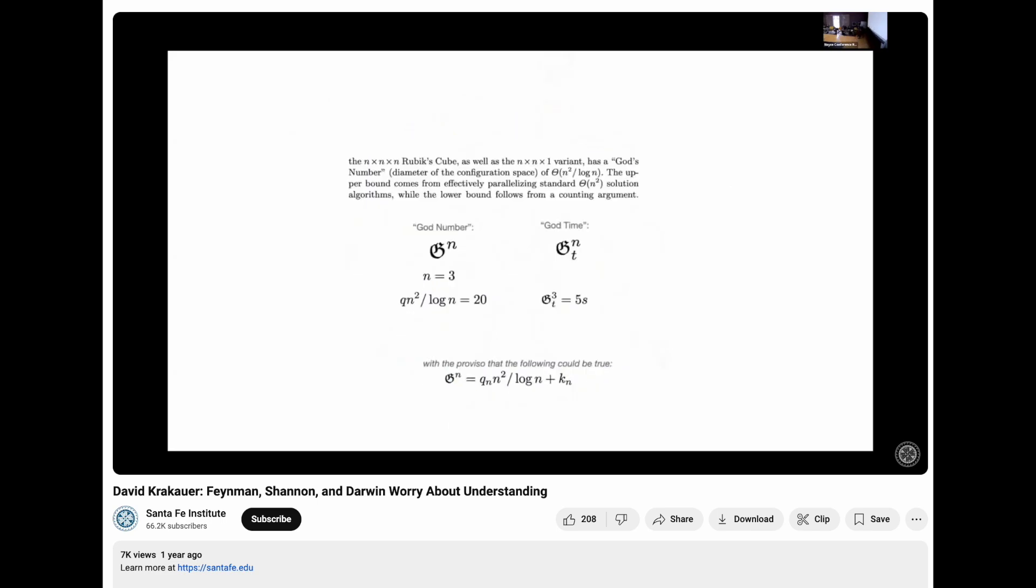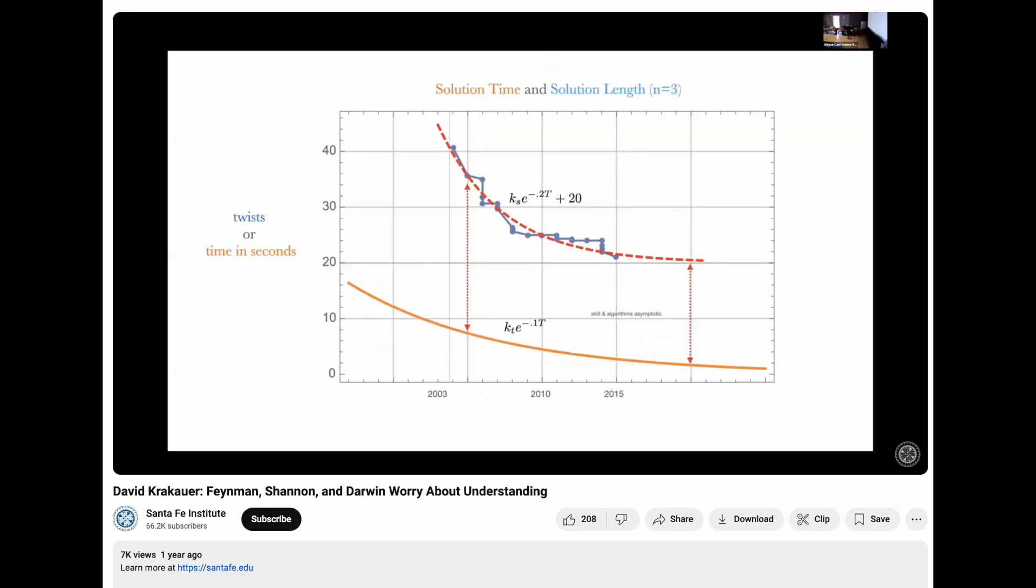So there is, as I said, a god number. There's a god number for any dimensional cube. And there should be a corresponding god time. The number of physical moves is going to correlate with the time. But of course, the time is messier. The blue line is the solutions to the cube from 2003, that's where tournaments began. And the orange line is time to solve.